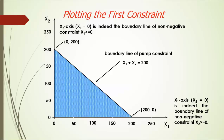Notice that each point on the graph represents a unique product mix. For example, (200, 0) means the firm produces 200 AquaSpa but no HydroLuxe. This boundary line contains all the product mixes that use exactly 200 pumps. Following the same logic, the x1 axis is the boundary line of the non-negative constraint x2 greater than or equal to 0, and the x2 axis is the boundary line of the non-negative constraint x1 greater than or equal to 0.